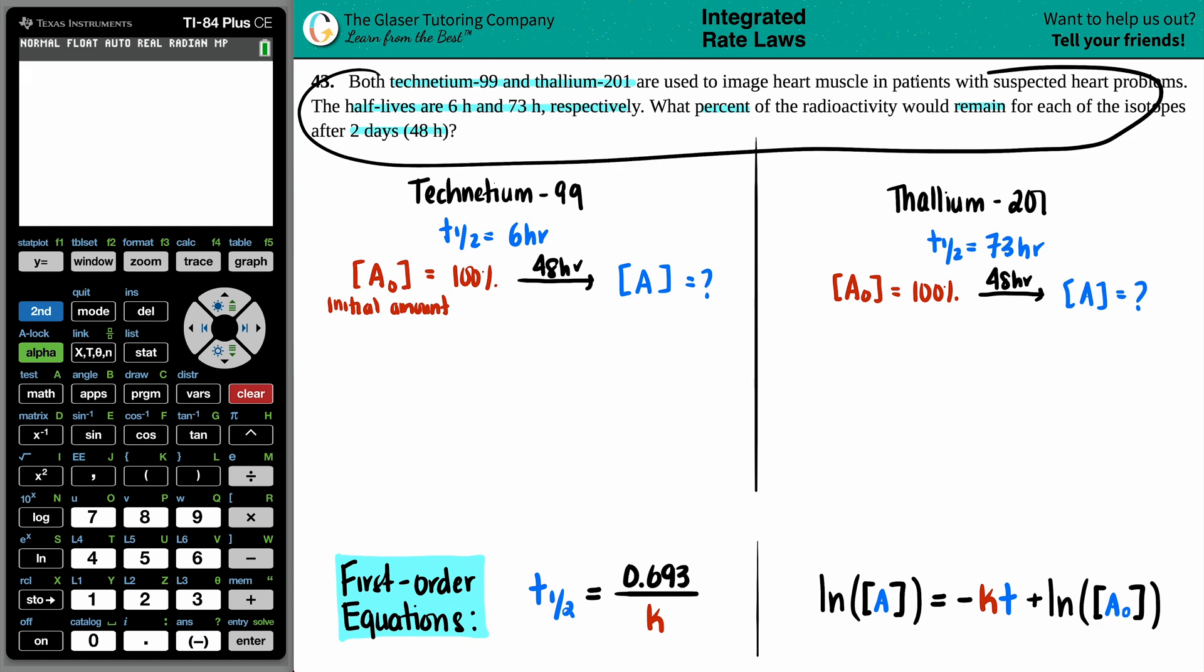Hopefully, if you read the question, they will kind of tell you what the order is. But in this case, if you read it over again, there's no indication. There's no indication from the units of the K value, right? The rate constant. There's no indications in wordings. But here it is.